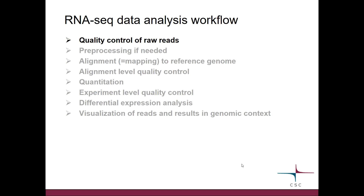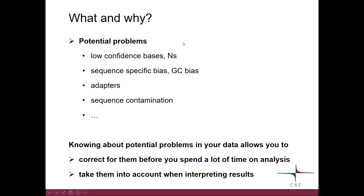Let's start our data analysis workflow and discuss the first step, which is the quality control of raw reads. So why should you care? Well, the reads can have several problems. Some of the base calls might not be correct. If the machine cannot guess at all, it will place N instead of one of the bases. There can be different kinds of biases in the data, there can be sequencing adapters left, or there can be sequence contamination. Knowing about these problems is useful because some of them you can correct for before you spend a lot of time on data analysis, and some you cannot correct, but at least you can keep them in mind when interpreting results.